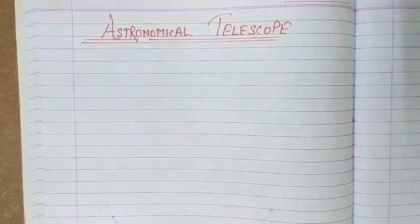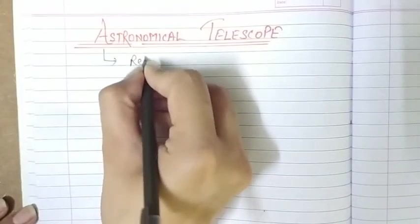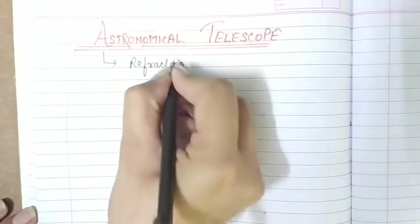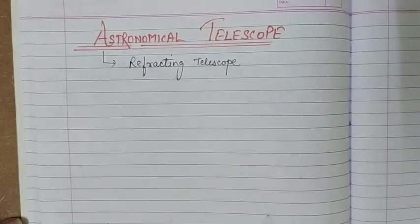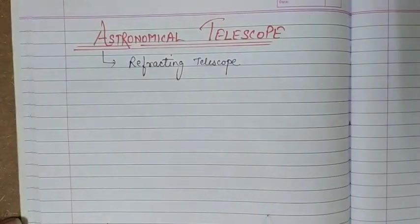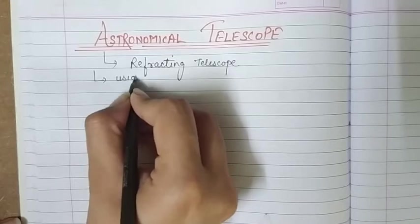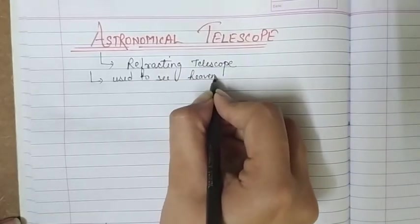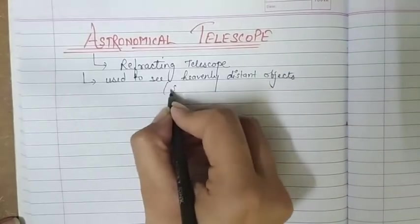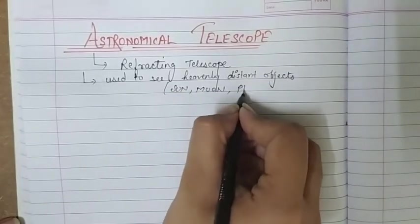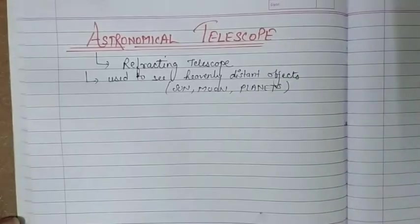In this video we are going to study about the astronomical telescope, which is a type of refracting telescope. It is used to see heavenly objects like the sun, stars, planets, or other distant heavenly objects. Because it is used in astronomical studies, it is called an astronomical telescope.